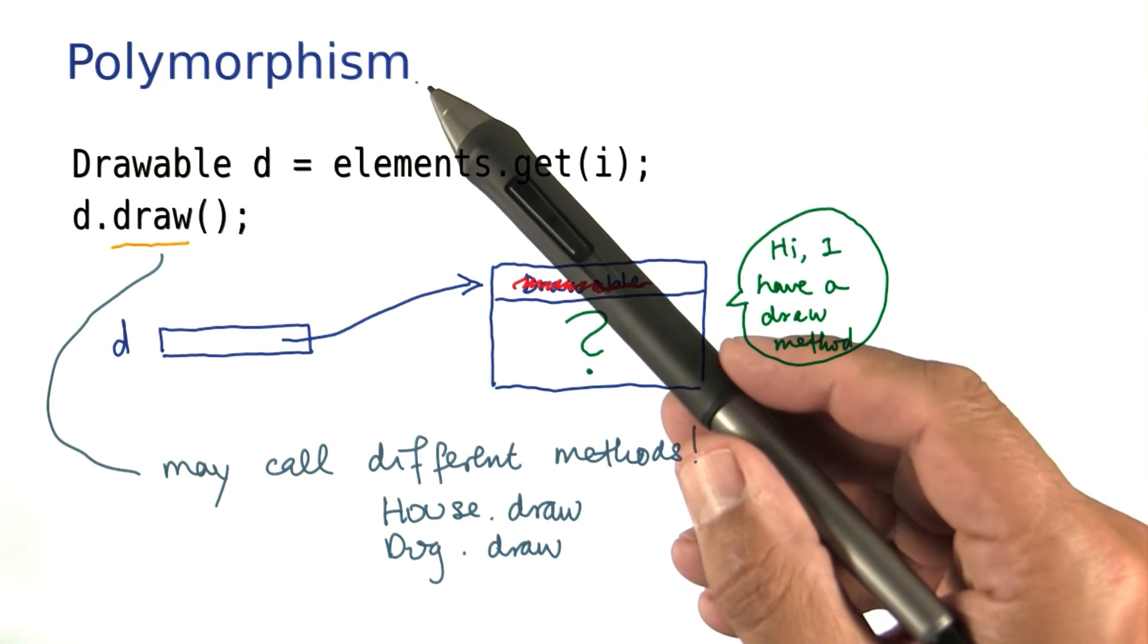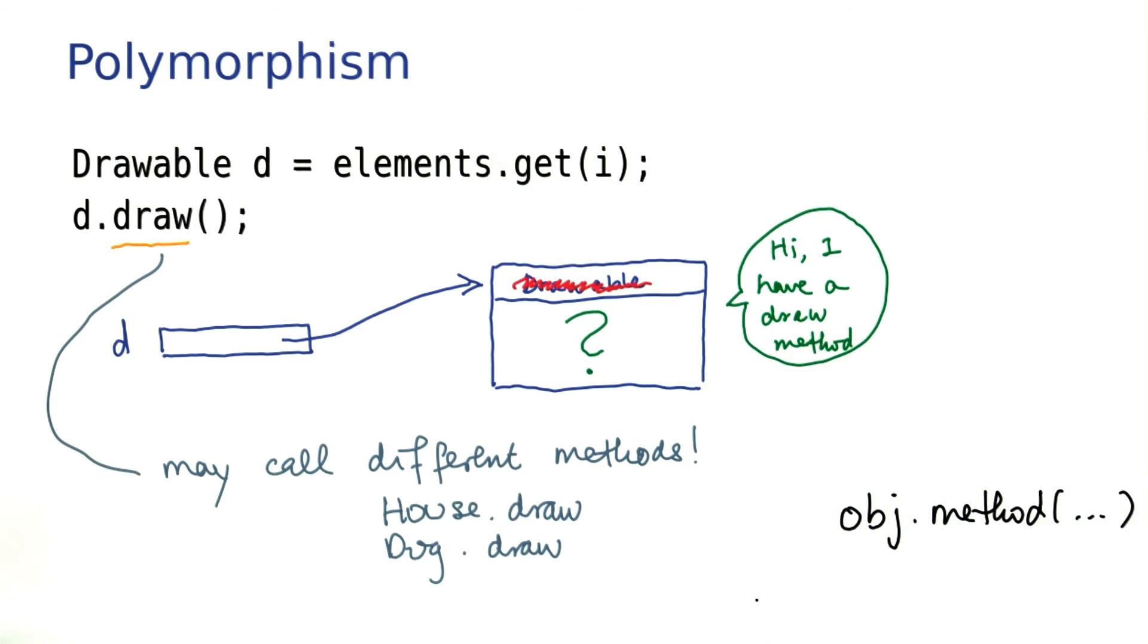But the term polymorphism is used generally in Java to indicate any situation where you have a method call, and the actual method called depends on the type of the object.